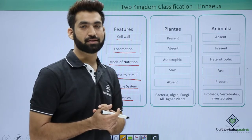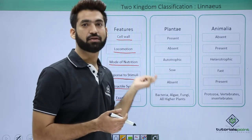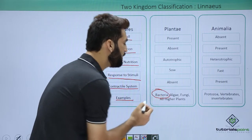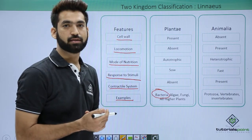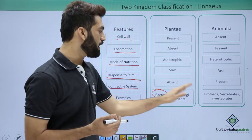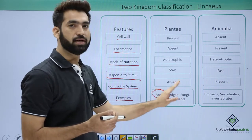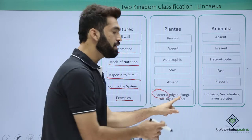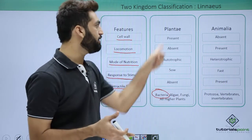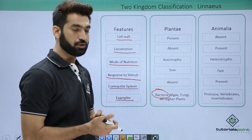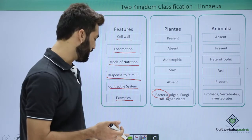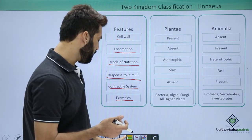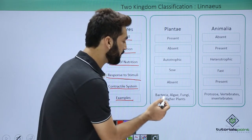There are various limitations of this classification system. First, bacteria is a group of prokaryotes, while all other members are eukaryotes — yet prokaryotes and eukaryotes are clubbed together into the same kingdom. This is one major limitation of the two kingdom classification system.